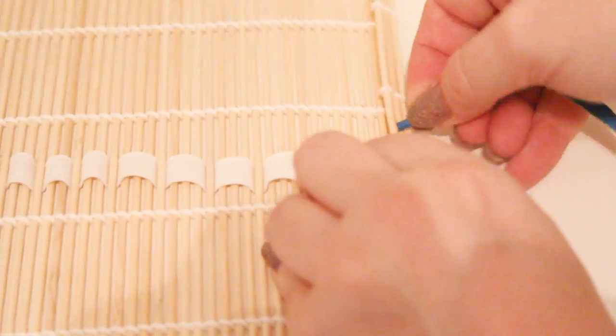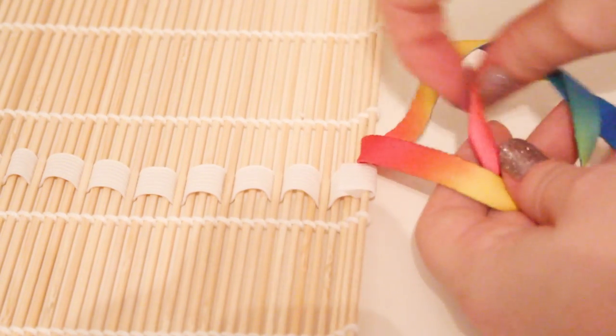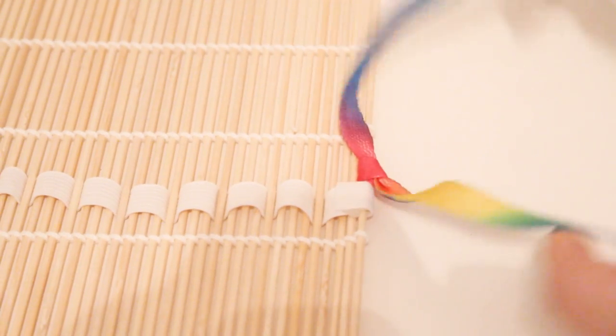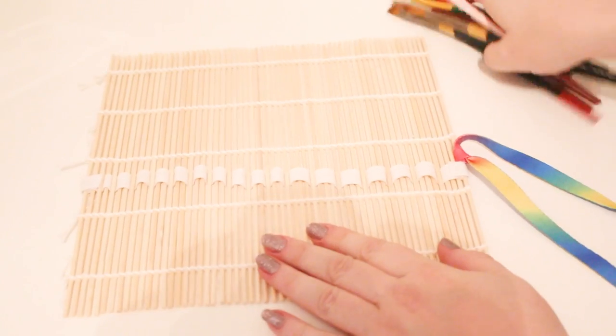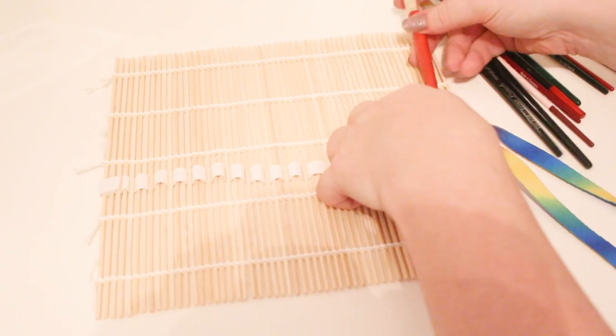Then just take a piece of ribbon or string, or for this I've used an old shoelace. Weave it through one end and tie it off so that you've got two long pieces of the same length hanging down. Then fill up the roll with your brushes. You could also fill it with pens and pencils or you could actually put your makeup brushes in here.